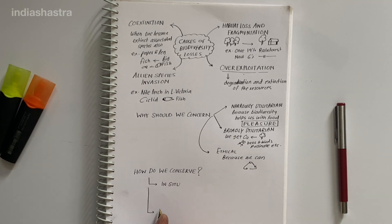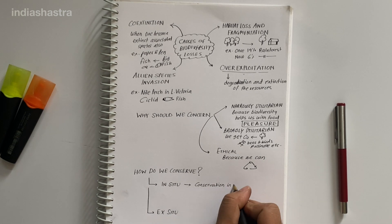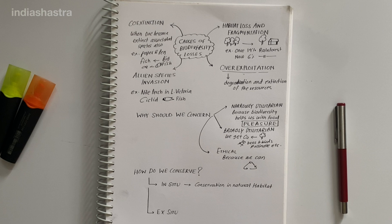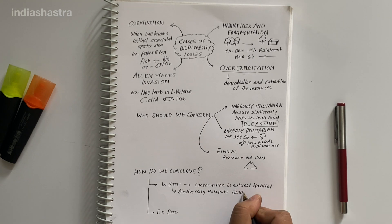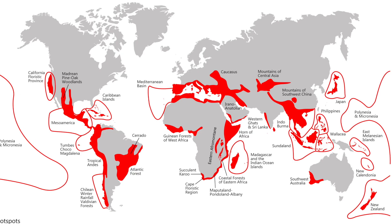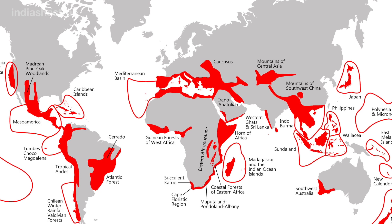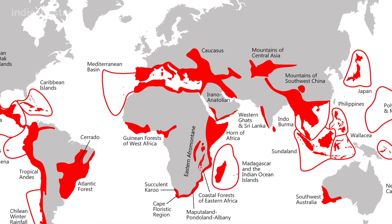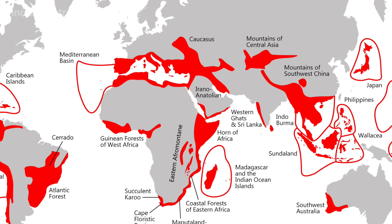How do we conserve biodiversity? There are two basic approaches: in-situ conservation and ex-situ conservation. In-situ conservation is also known as on-site conservation — the conservation and protection of species in their natural habitat. Biodiversity hotspots are a type of in-situ conservation: regions with very high levels of species richness and high degree of endemism identified for maximum protection. Endemism means species confined to a region and not found elsewhere. There are 36 biodiversity hotspots in the world, out of which 4 are in India: the Himalayas, the Western Ghats, the Indo-Burma region, and the Sundaland, which includes the Nicobar group of islands.